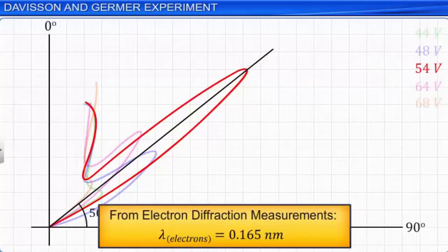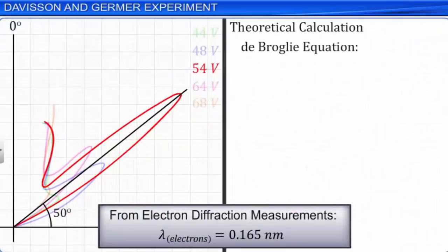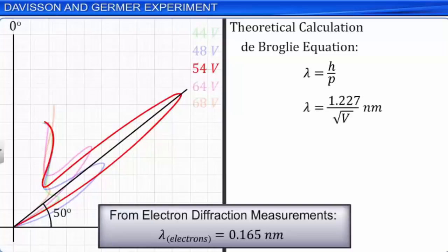The appearance of the peak in a particular direction is due to the constructive interference of electrons scattered from different layers of the regularly spaced atoms of the crystal. From electron diffraction measurements, the wavelength of matter waves was found to be 0.165 nanometers. We know that the De Broglie wavelength of an electron λ = h/p, where h is Planck's constant and p is the momentum of the electron. If the electron is accelerated from rest through a potential difference of V volt, substituting the values of mass of the electron, charge on the electron, and Planck's constant, the expression for wavelength is obtained as 1.227/√V nanometer.